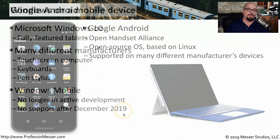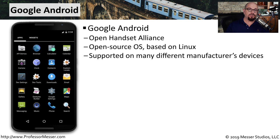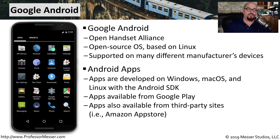On the handset and mobile phone side, one of the operating systems you'll commonly see is the Android operating system from Google. This is actually the Open Handset Alliance, and it runs an open source Linux version of an operating system on these small mobile devices. There are many different manufacturers that make Android-compatible systems. If you're an application developer, you can create apps for Android inside of Windows, Mac OS, and Linux using the Android Software Developers Kit. End users can install apps from Google Play or from third-party sites such as the Amazon App Store.